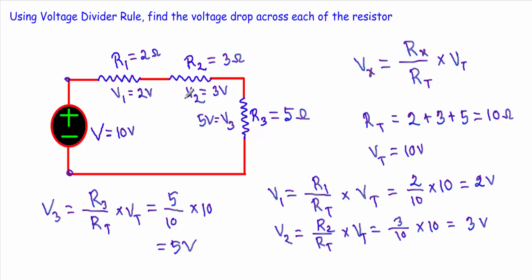Now let's justify the conclusion. We are supplying 10 volts total. We get only 2 volt across R1, 3 volt across R2, and 5 volt across R3. R1 has the lowest resistance of 2 ohm, so the lowest voltage drops across it. R3 has the highest resistance of 5 ohm, so the highest voltage drops across it. This confirms that in a series circuit, the voltage divider rule lets us find what portion of total voltage drops across each resistor. That's it, thank you.